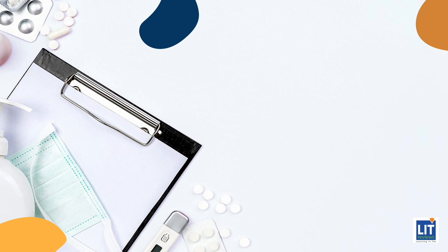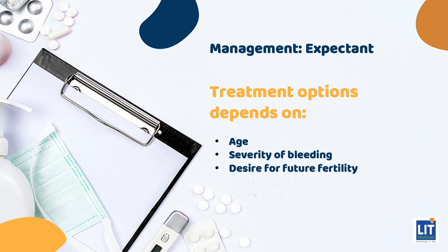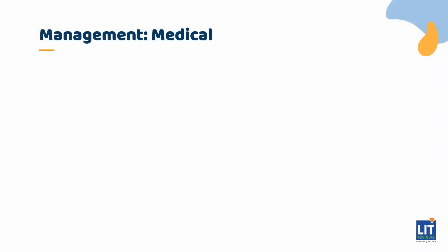We will be discussing the different treatment modalities currently available for AUB, rather than acute management. Treatment options depend on age, severity of bleeding, desire for future fertility, and presence of associated symptoms. Medical treatment of AUB can be subdivided into non-hormonal or hormonal treatments.